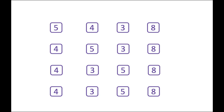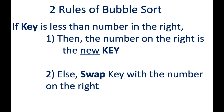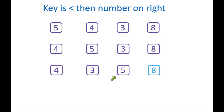If we keep on iterating till all the numbers are exhausted in the list, we will end up with a sorted list. In bubble sort there are only a couple of rules to follow. Rule one: if the key is lesser than the number to the right, then the number on the right becomes the new key. As we saw on the third iteration, the key was lesser than the number on the right.